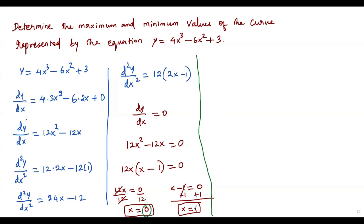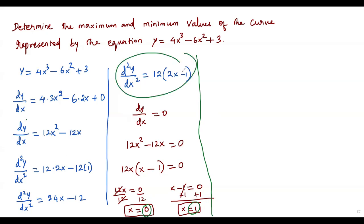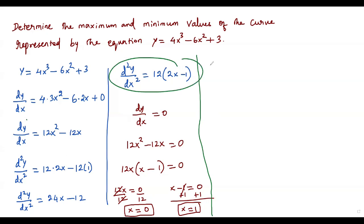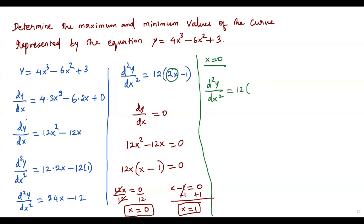Now we plug each critical number into the second derivative. Using the factored form makes this easier. Plugging x equals 0 into d²y/dx² = 12(2x minus 1): the term 2 times 0 is 0, so we get 12 times negative 1, which equals negative 12. Since this is less than zero, the function has a maximum value at x equals 0.